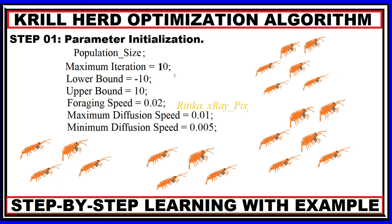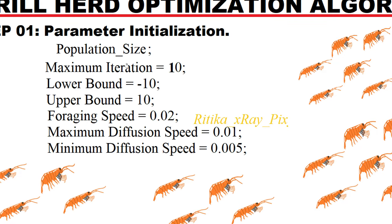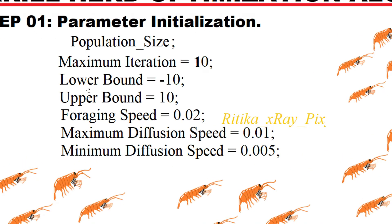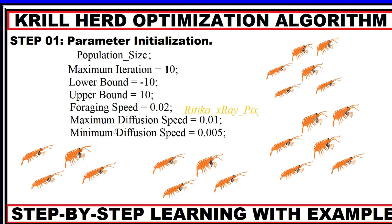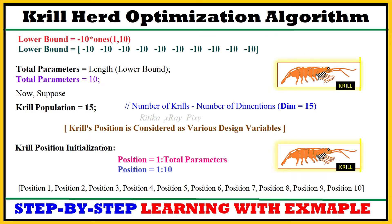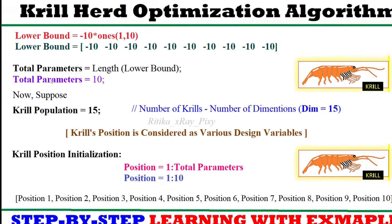For example, population size — that is the total number of search agents in the search space — maximum number of iterations, search space boundary that is the lower bound and upper bound, and the algorithm parameters: that is krill's foraging speed and minimum/maximum diffusion speed for the krill.